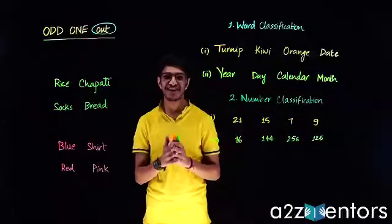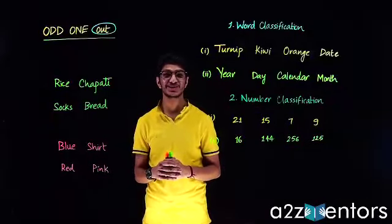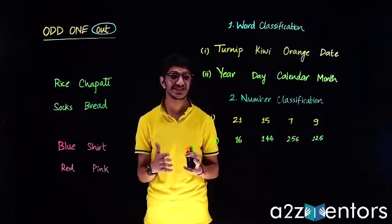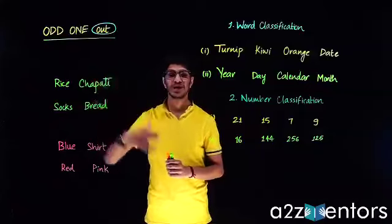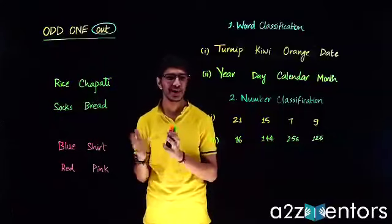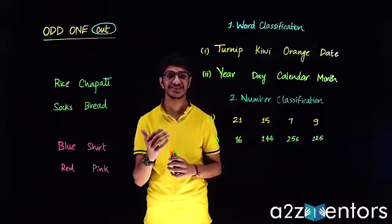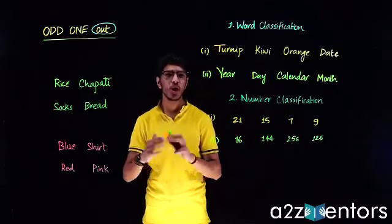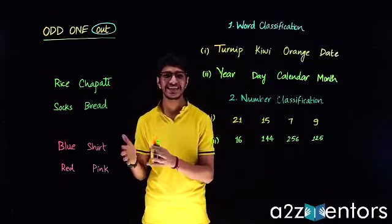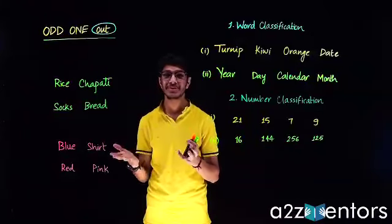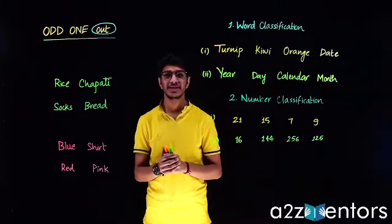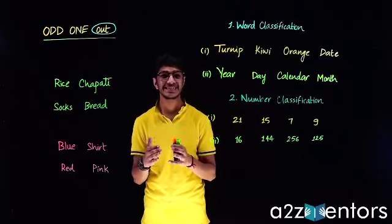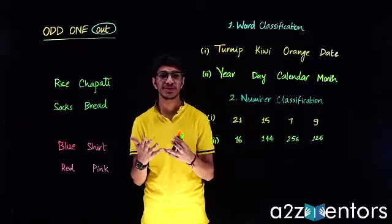Hello, welcome to this world of learning. We are studying verbal reasoning and the next topic we are going to cover is 'Odd One Out,' also known as classification. A group or set of items is given to us, and all elements except one are similar to each other. We as students have to find that odd one, which is the element not following the common property that the rest of the elements are following.